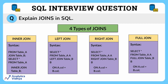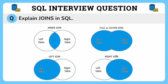Finally, we have the full join. In a full join, all records are returned when there is a match in any of the tables. It returns all the rows from the left-hand side of the table and all the rows from the right-hand side of the table. Here is the syntax for the full join. And here is a pictorial representation of all the join clauses — screenshot this, it will help you.